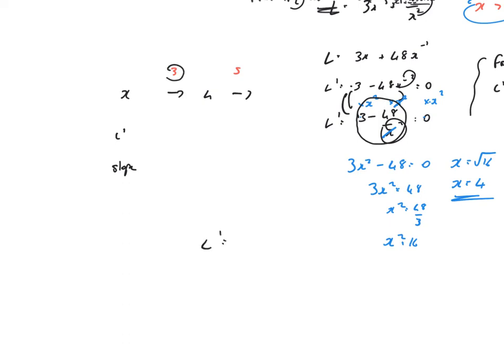L dashed equals 3 minus 48 over 3 squared. That will give me minus 2.3 recurring. What I glean from that is that is a negative result. I'll have a zero result because it's a stationary point when x equals 4.